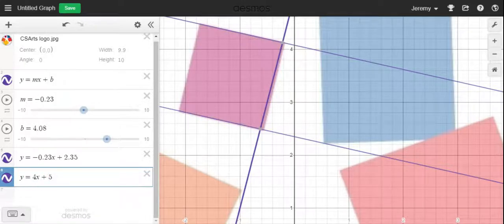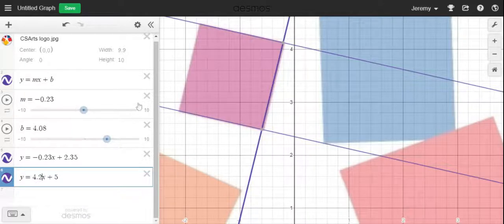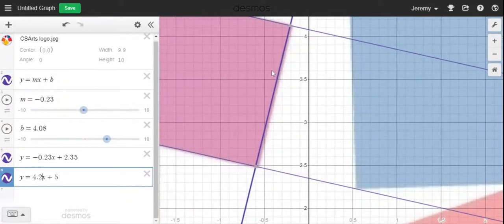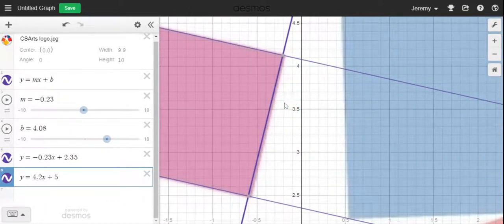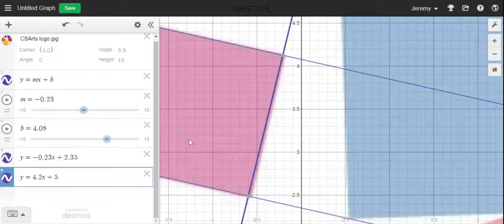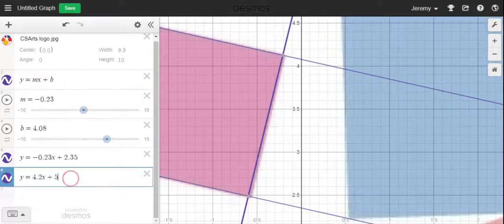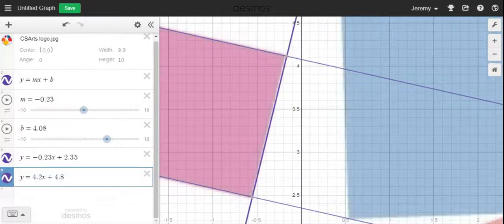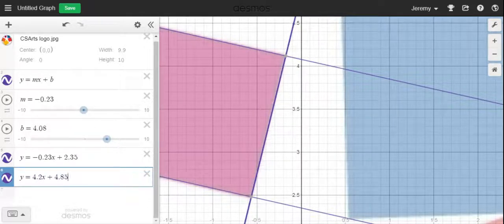The slope is a little bit too big. That's pretty close right there. That's pretty close. And my y-intercept is now a little bit too tall. So I'm going to drop this down to like 4.8. It's not tall enough. 4.85. There we go. I like that.